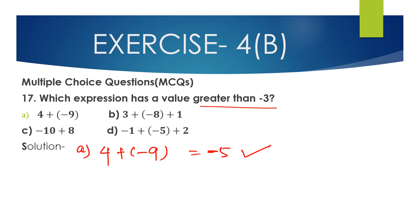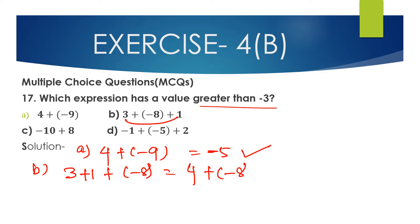Option B: 3 plus 1 minus 8. First, 3 plus 1 equals 4. Then 4 plus minus 8: subtract 4 from 8 to get 4, and place the sign of the bigger integer — 8 is negative — so the answer is minus 4.